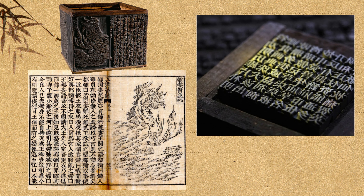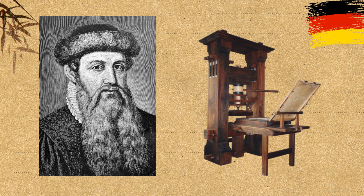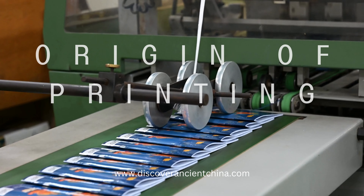The journey of printing began with simple carved woodblocks in China and evolved into a sophisticated system of movable type, laying the foundation for the global printing revolution that would follow in the coming centuries. This trajectory culminated in the mid-15th century with the introduction of Johannes Gutenberg's mechanical movable type printing press in Mainz, Germany. His invention further democratized knowledge and catalyzed the spread of information on an unprecedented scale. And that is the origin of printing.